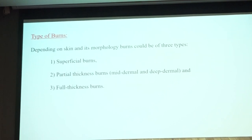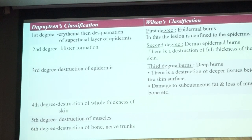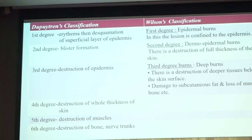The type of burns depending on the skin and morphology are: superficial, partial thickness burns, and full thickness burns. The degree of burns is classified as per Dupuytren's classification and Wilson's classification. Dupuytren's classification has six degrees, while Wilson's has only three: epidermal burns, thermal epidermal burns, and deep burns.